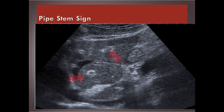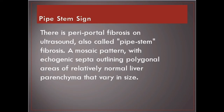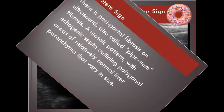Pipe stem sign. There is periportal fibrosis on ultrasound, also called pipe stem fibrosis. A mosaic pattern with echogenic septa outlining polygonal areas of relatively normal liver parenchyma that vary in size.